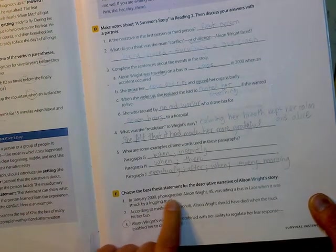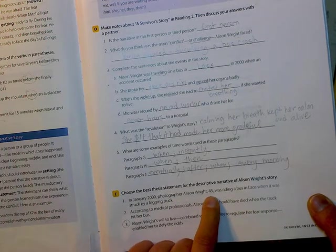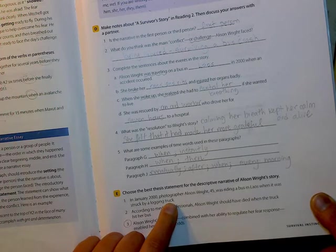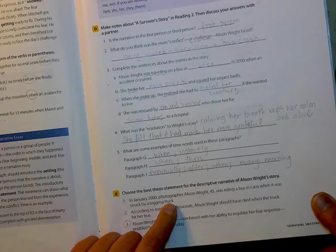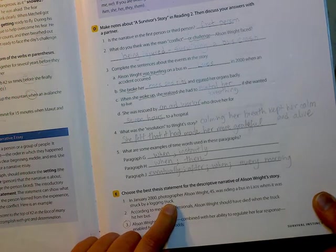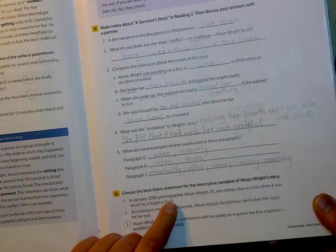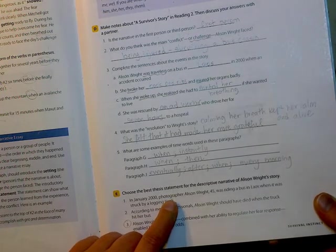So let's take a look. In January 2000, photographer Allison Wright, 45, was riding a bus in Laos when it was struck by a logging truck. Is that a message, or a lesson, or some deep idea? No, it's just telling us the basic information. That would be a good introductory sentence, right? Gives us the basic information.